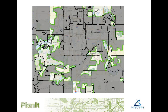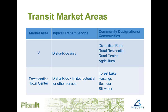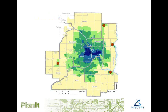Transit market area four includes suburban edge and emerging suburban edge communities — examples include the cities of Chanhassen, Prior Lake, and Farmington. Transit market area five includes the rural and agricultural communities in the region, where density is too low to support either express or local bus service. Freestanding town centers are locations throughout the region that have good density and urban form for transit, but are small and isolated to the extent that it's difficult to support cost-effective service. On this map, transit market area five is represented by the yellow area and the freestanding town centers by the red dots.